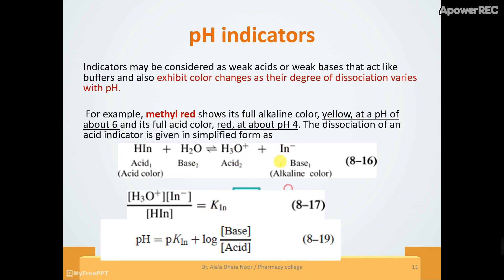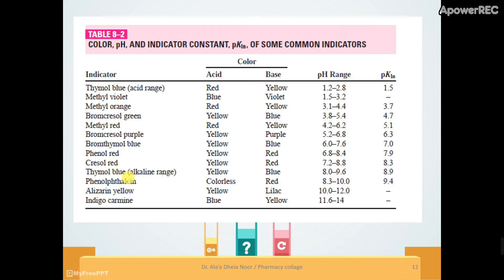From the dissociation of the indicator we can derive a dissociation constant: Ka(indicator) equals hydronium times the indicator ion (base form), divided by the acid form. This gives: pH equals pKa(indicator) plus log of base form over acid form. Tables show different indicators with their acid color, base color, pKa(indicator), and the pH transition range.